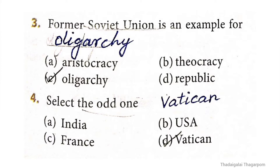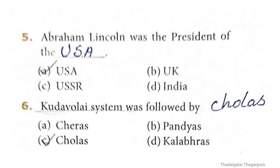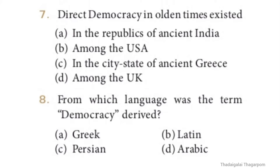Fourth question: select the odd one - India, USA, France, Vatican. The odd one is option D: Vatican. Fifth question: Abraham Lincoln was the president of what country? The correct answer is option A: USA. Sixth question: the Kudavolai system was followed by which dynasty? The correct answer is option C: Cholas.